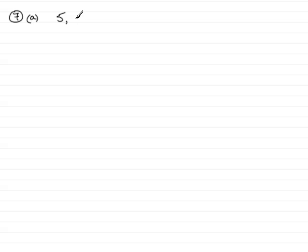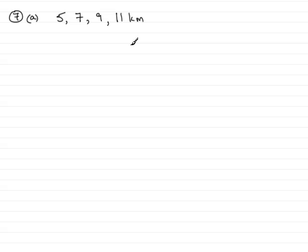Part a is a very easy question. On the first Sunday she runs five kilometers, the next Sunday she runs an extra two more kilometers — that's going to be seven. The third Sunday another extra two kilometers, so that's nine kilometers, and then on the fourth Sunday another extra two kilometers, so that's eleven kilometers. That's sufficient to show that on the fourth Sunday she runs eleven kilometers.